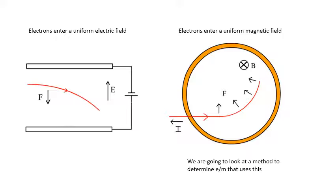The acceleration will always be towards a certain point. This symbol here means that the field is coming towards us. If you do Fleming's left-hand rule to work out the direction of the force. The method we're going to look at uses just a magnetic field produced by these big coils called Helmholtz coils.